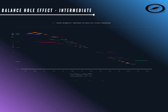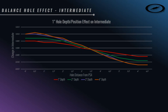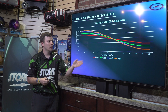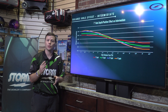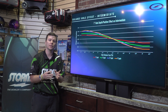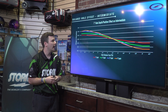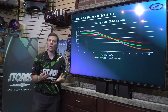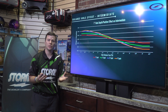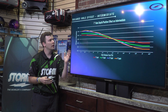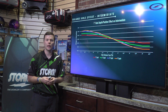Last up we have intermediate differential. Intermediate is the difference between the Y-axis and the Z-axis of the bowling ball. We have the same style graph here, but this time on the X-axis we have the hole distance from the PSA — no longer the pin. Change in intermediate is our Y-axis. You'll notice this looks pretty similar to the total differential graph, but it looks like it's been flipped in a mirror as far as which direction those lines are going.